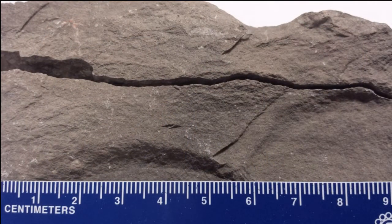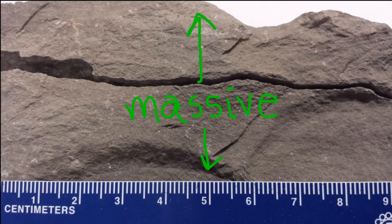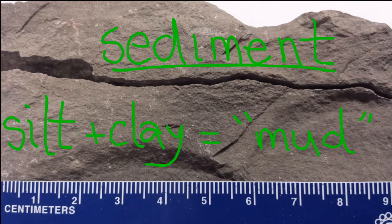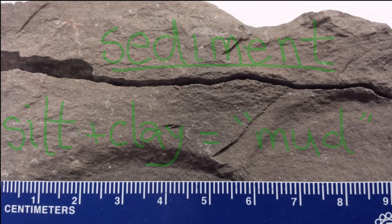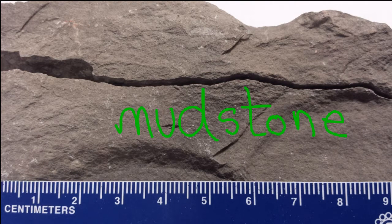Another important feature is the degree to which a rock splits into thin layers. We call the layering of this rock massive. If you break it with a hammer, it splits into thick chunks. Although your lab book may make the distinction between siltstone and claystone, we won't. The fine-grained rock that shows massive bedding we'll call mudstone.